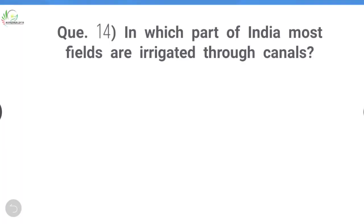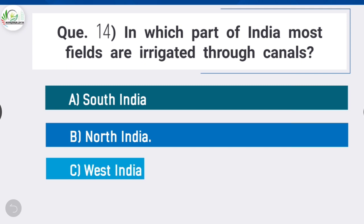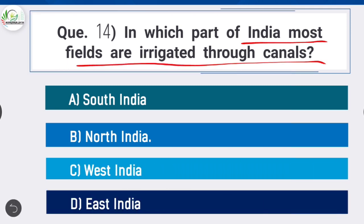Question 14: In which part of India are most fields irrigated through canals? Option B is correct: north India. Wells and tube wells are used mostly in India as a source of irrigation. Canals are the second most important source. Canals are generally used to irrigate lands with large plains, fertile soils, and perennial rivers. The plains of north India are mostly irrigated through canals.